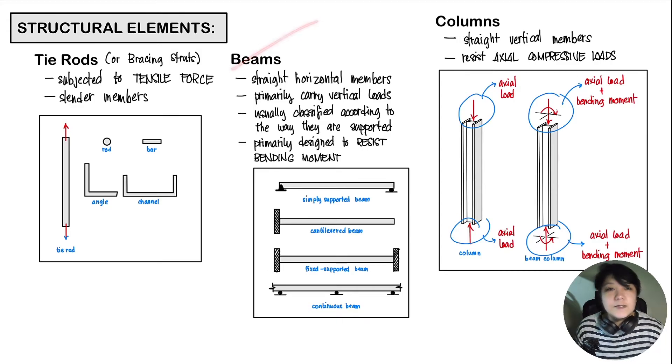The next structural element would be our beams. Our beams are typically straight horizontal members that primarily carry vertical loads. They are usually classified according to the way they are supported. We have a simply supported beam, which is supported by a hinge and a roller on each end. Then we have a cantilevered beam, which has a fixed support on one end. We have a fixed supported beam where it has a fixed support on both ends. And then we have a continuous beam where it has multiple spans and multiple supports. These members are primarily designed to resist bending moments.